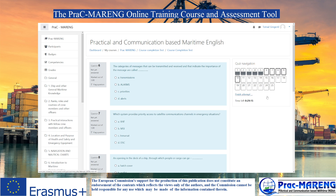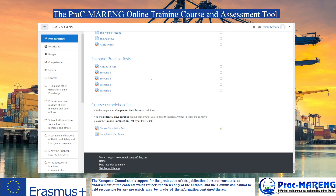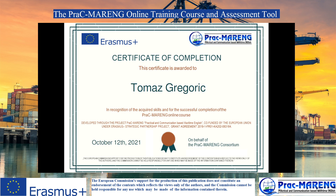Before you finish the attempt, you can review your answers once more if there is still time left. If you pass the course completion test with at least 70%, you can get your completion certificate, which includes your name, surname, and the date of issue. I wish you successful and enjoyable learning at the Pragmarenk course, and hopefully at the end you will obtain this certificate of completion. Thank you.